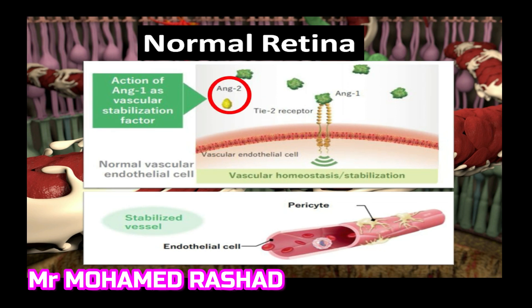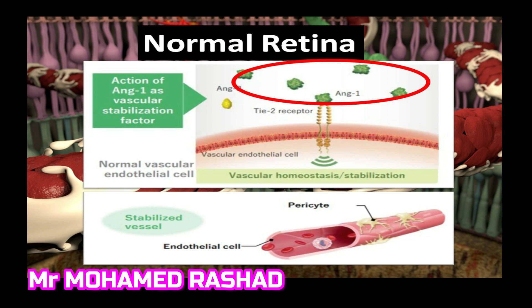There is another molecule called Angiopoietin-2, which blocks this signaling by the TIE2 receptors. But in normal conditions, this molecule is present in very low amounts. So in normal conditions, Angiopoietin-1, which is the good molecule, is present in large amounts compared to Angiopoietin-2, and so the retinal blood vessels are stabilized.